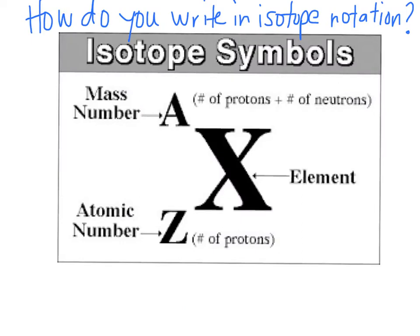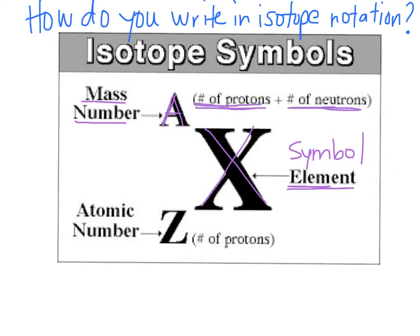Before we work out that example, we're going to talk about how do you write an isotope notation. You basically need three things. First thing you need is the symbol of the element. You can just get this right off the periodic table. Then you need the mass number, which is represented by A. You can calculate this on your own by getting the number of protons and adding that to the number of neutrons.